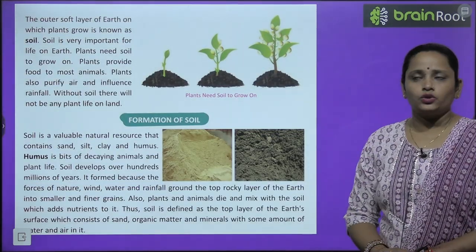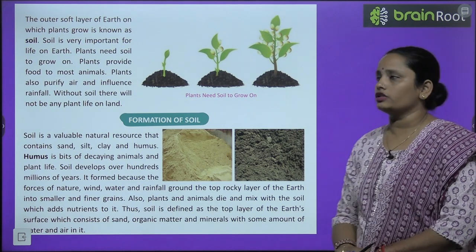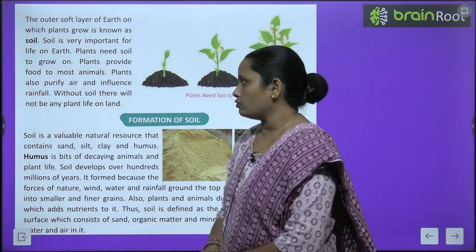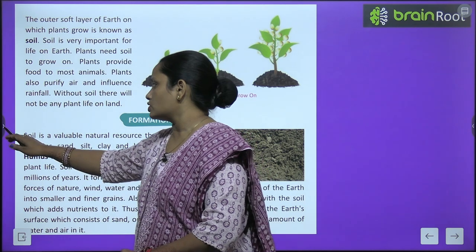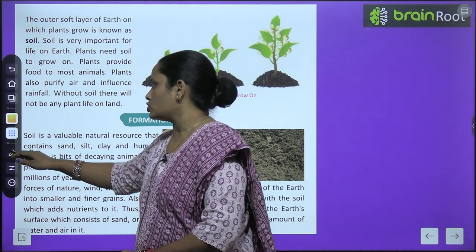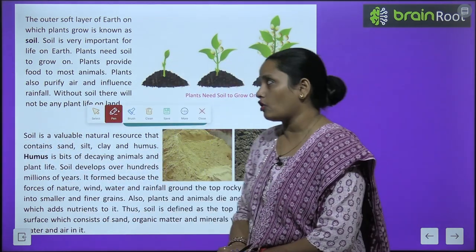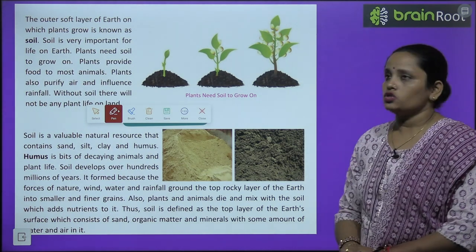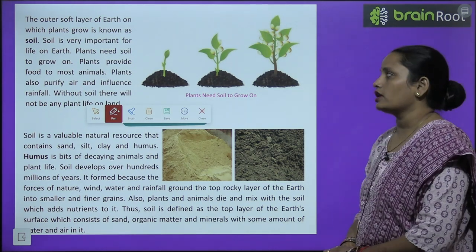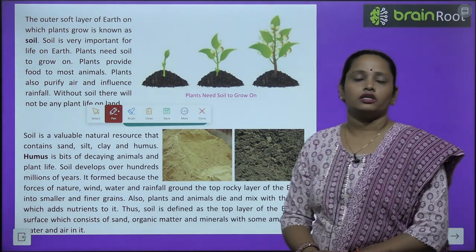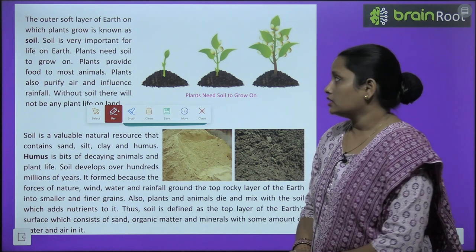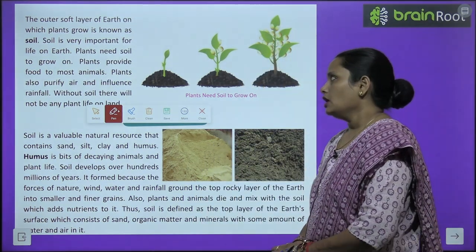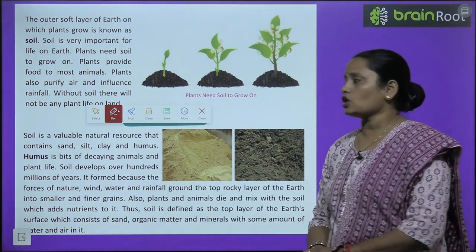The outer soft layer of earth on which plants grow is known as soil. Yeh wo area jahaan pe plants grow karte hain, jo bahar ka hissa hai, jo kaafi zyada soft hota hai — is area ko hum soil kehte hain. Soil is very important for life on earth.